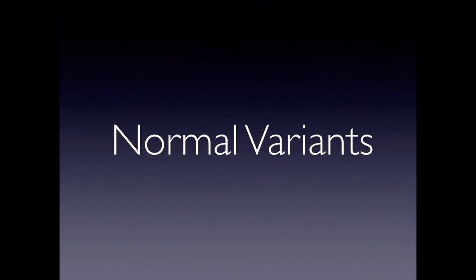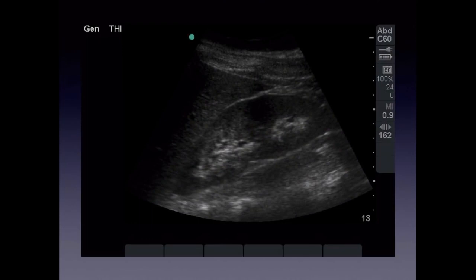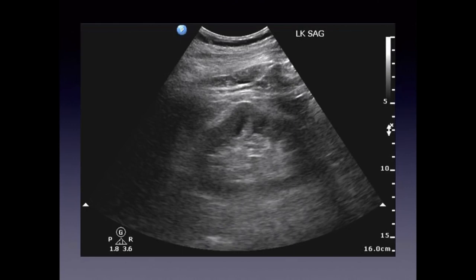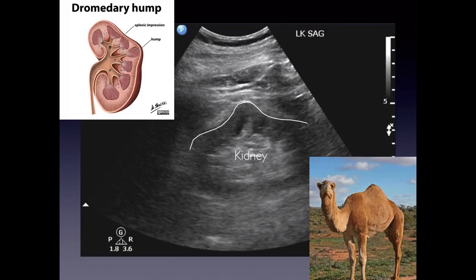There are a couple of normal variants to be aware of. A dual collecting system appears as a break or space within the renal sinus. A dromedary hump is a normal contour variant seen on the left kidney where the kidney appears to bulge upward like a camel's hump — this is related to the kidney fitting up against the spleen on the left side.